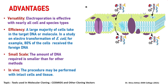The advantages of electroporation over the chemical method: electroporation is effective with nearly all cell and species types on earth. It is very efficient — in a study on electrotransformation of E. coli, it was found that 80 percent of the cells received the foreign DNA. The amount of DNA required is very small compared to other methods, so there is no wastage of your gene of interest. Also, this process may be performed in vivo — for example, it can be used to inject directly into the epidermal skin, which is a layer made up of a phospholipid bilayer, for gene targeting in humans.